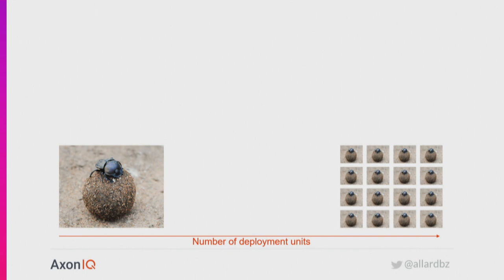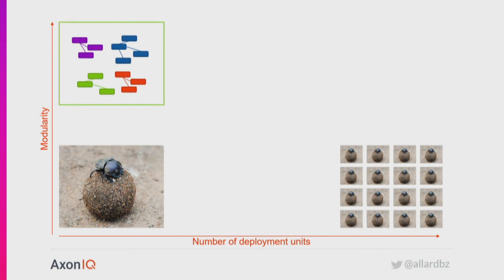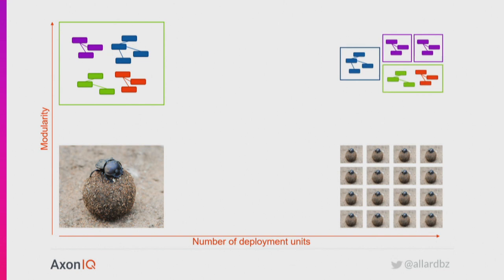What we should instead do is increase the modularity of the components that we're building. What we need to do is build something that has a clear structure inside of it that is nice to work with, not just today, but also in a couple of years. And then as time moves on, we can increase the number of deployment units and split that application apart — the monolith-first approach.